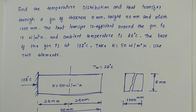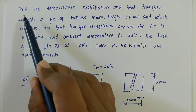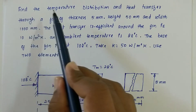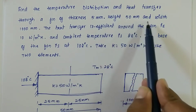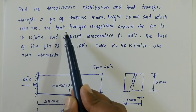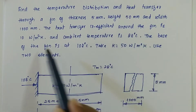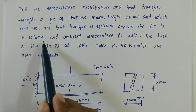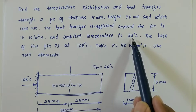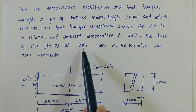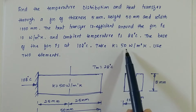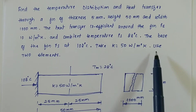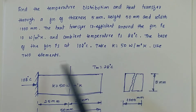Hi, I am Arjun. In this session we will see how to solve the problems on fins. Find the temperature distribution and heat transfer to a fin of thickness 5 mm, height 50 mm, and width 1000 mm. The heat transfer coefficient around the fin is 10 Watt per meter square degree Kelvin, the ambient temperature is 28 degree centigrade, and the base of the fin is at 108 degree centigrade. Take thermal conductivity K as 50 Watt per meter degree Kelvin and use two elements.